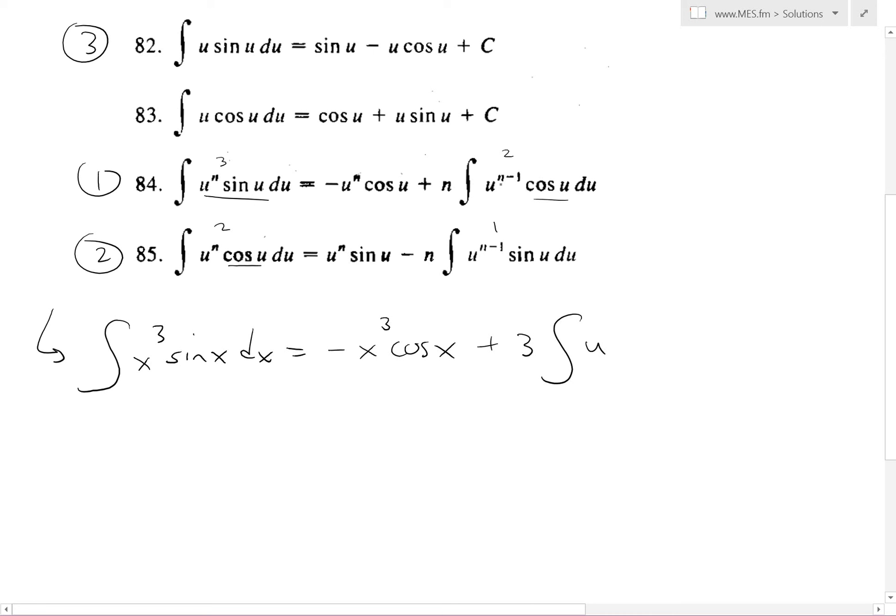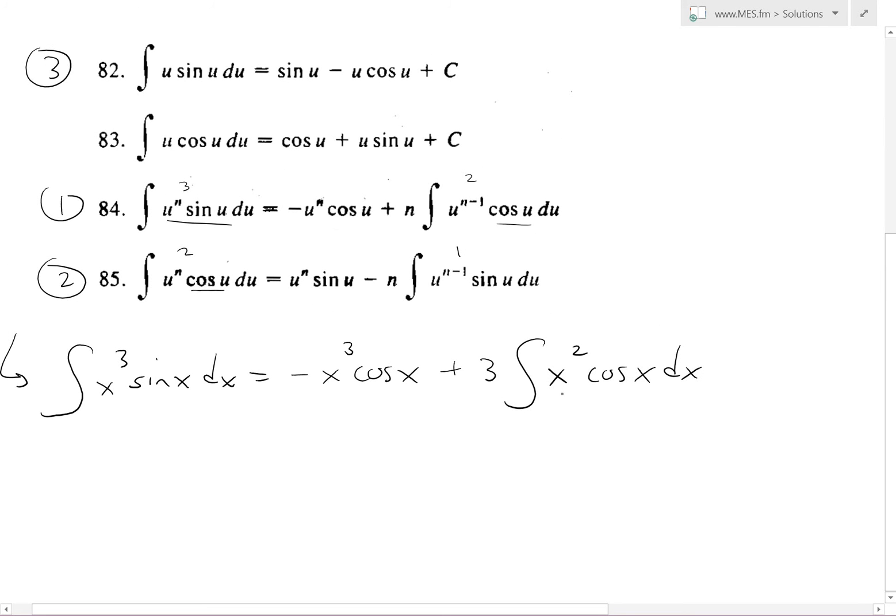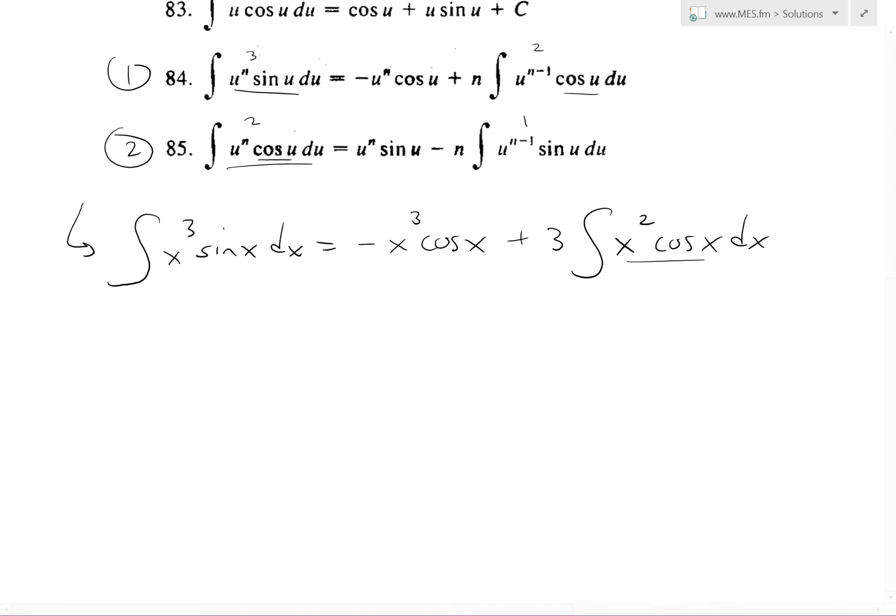Plus 3 (which is n) times the integral of u—now we have right here, the u is just x—so x² cos(x) dx right here. Now what we have right here, we've got to reduce this again using this formula.